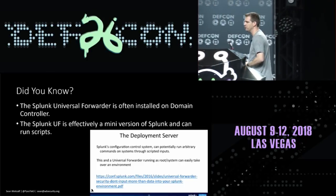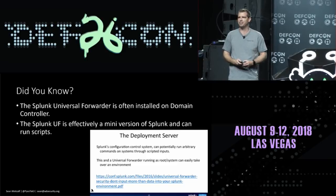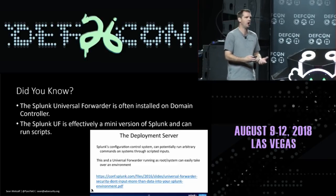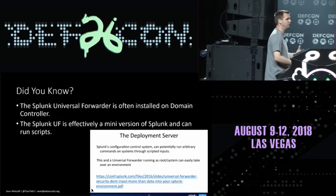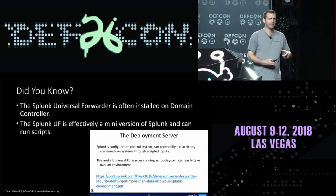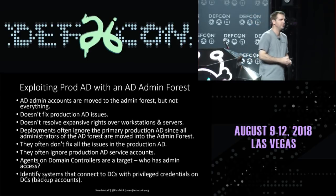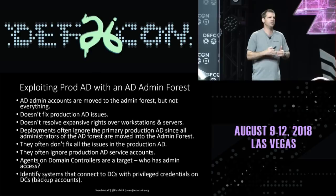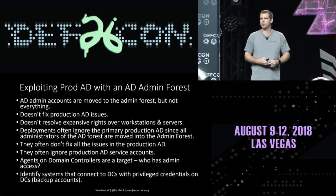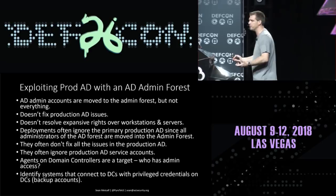Interestingly, the Splunk universal forwarder is often installed on domain controllers — it's effectively a mini version of Splunk and can run scripts. There was a talk at a Splunk conference about leveraging the deployment server to potentially run arbitrary commands. So if Splunk is installed on domain controllers and we can compromise a Splunk account or admin account, we could potentially jump to our domain controllers. The key is identifying which systems and agents connect to the domain controllers and what services have ability to install and run code on them.